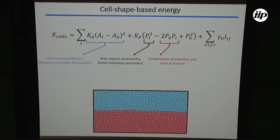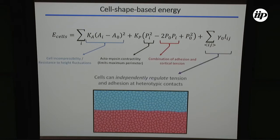We run simulations using the same shape-based energy for each cell, decorated with one additional term: if a red cell and a blue cell share an edge, we penalize the energy by an amount proportional to the length of that interface — a line tension between different cell species. Biologically this is natural since cells can independently regulate tensions and relative adhesions at interfaces between different types. We then ask: if I add this microscopic parameter, what happens at the mesoscale or macroscale — how does surface tension behave for aggregates of these interacting cell types?